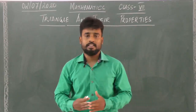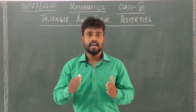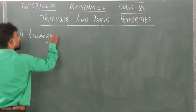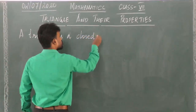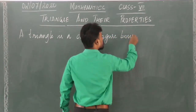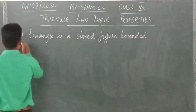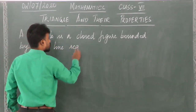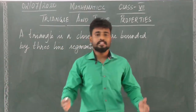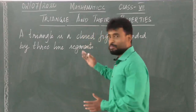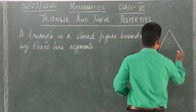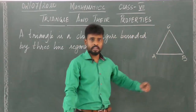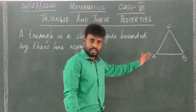Now you know that a triangle is a closed figure. It is a closed figure and it is bounded by three line segments. Let me write it down. A triangle is a closed figure bounded by three line segments. Let me draw a triangle. So we have this triangle ABC. A triangle is a closed figure bounded by three line segments.